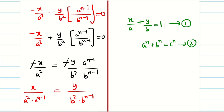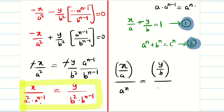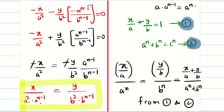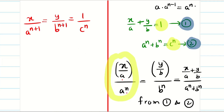We found the relation x/a^(n+1) = y/b^(n+1). Now rearranging in terms of equations 1 and 2: write x/a^(n+1) = (x/a)/aⁿ and y/b^(n+1) = (y/b)/bⁿ. Adding numerators and denominators using equation 1 (x/a + y/b = 1) and equation 2 (aⁿ + bⁿ = cⁿ), we get x/a^(n+1) = y/b^(n+1) = 1/cⁿ.